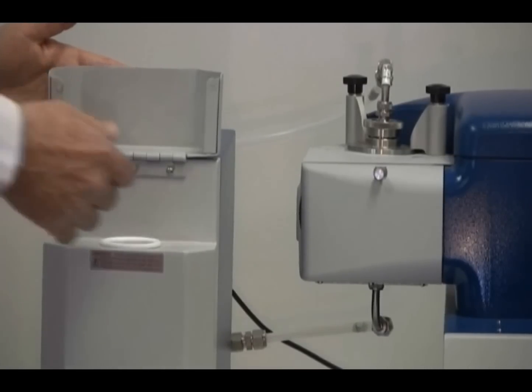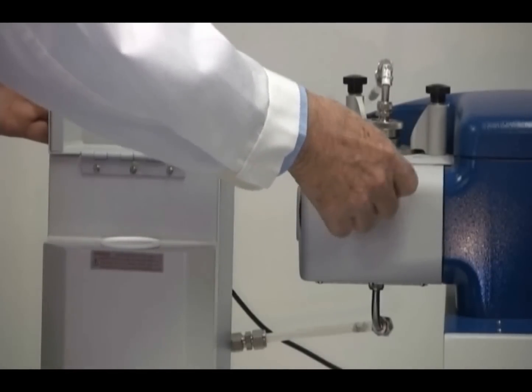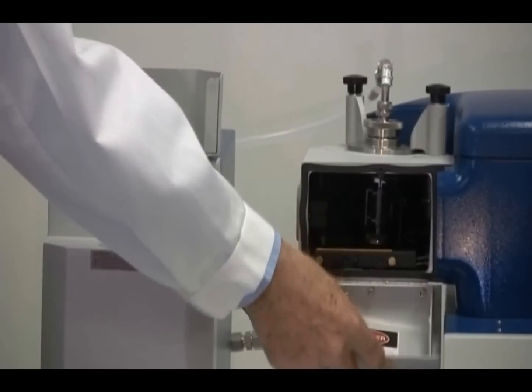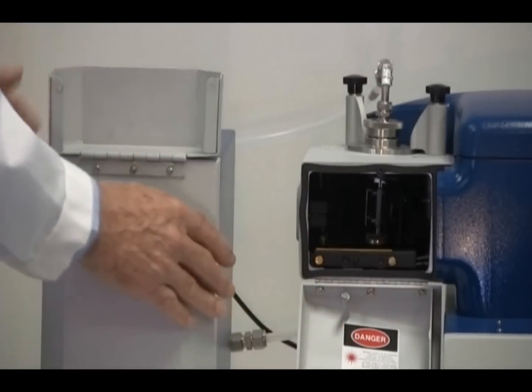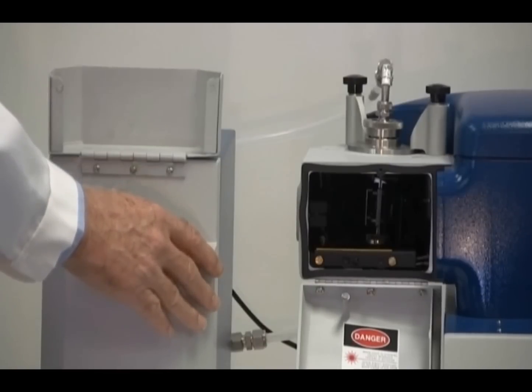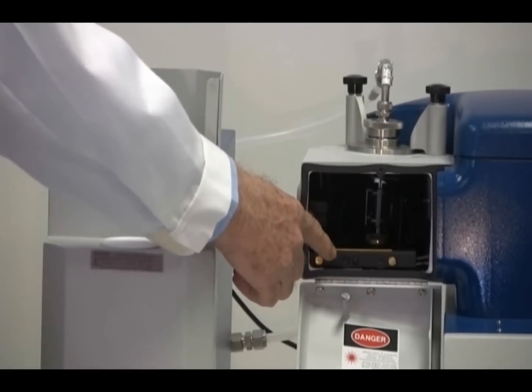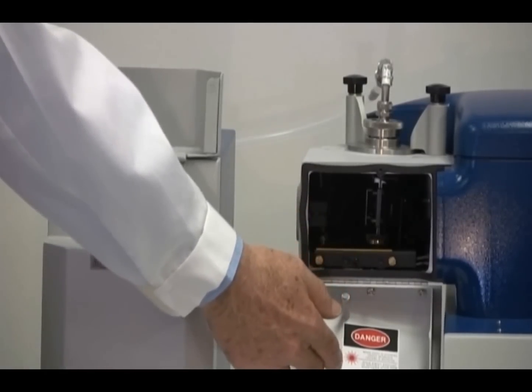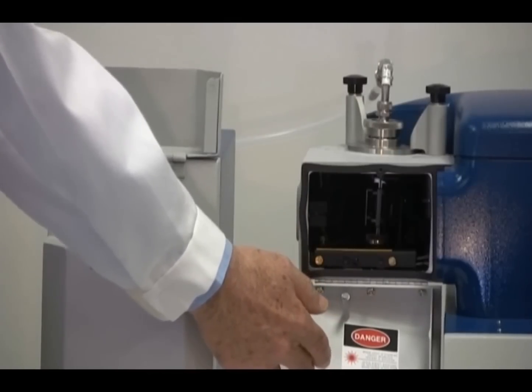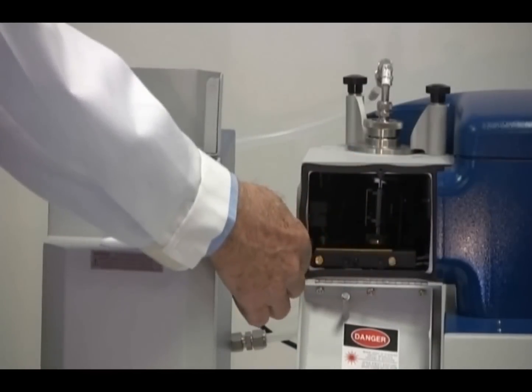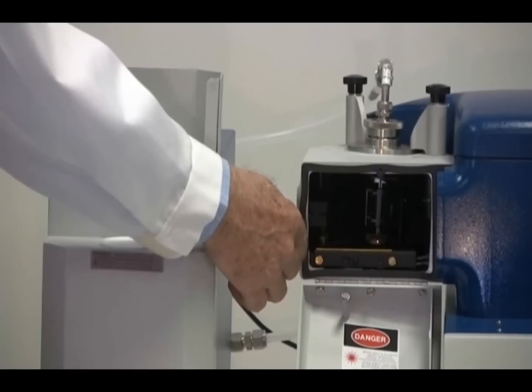To remove the sample cell, turn the knurled screw to the left until the door drops down. There are two things to mention about this area of the instrument. One is that there is a safety laser interlock. This interlock prevents the lasers from turning on when this door is in the down position. The other aspect of this sample chamber is that there is a gasket around the opening. This gasket prevents any dust or dirt particles from entering the optical system in the normal operation of the instrument.